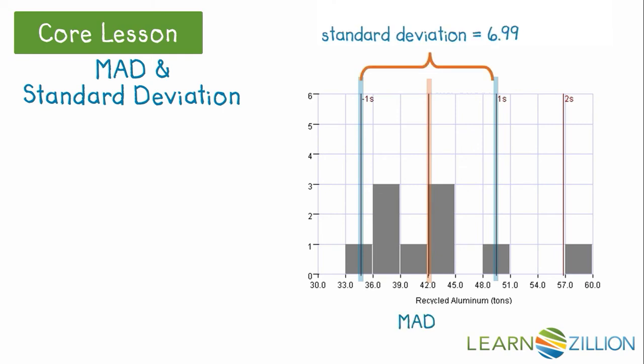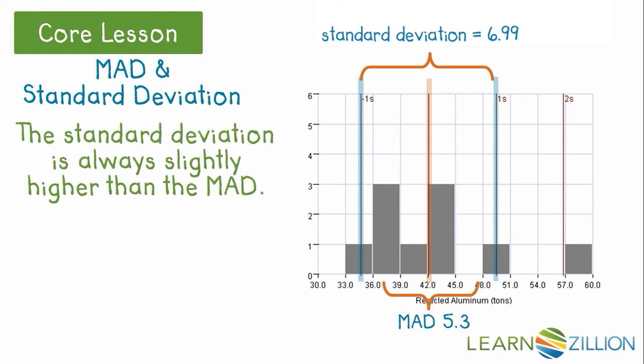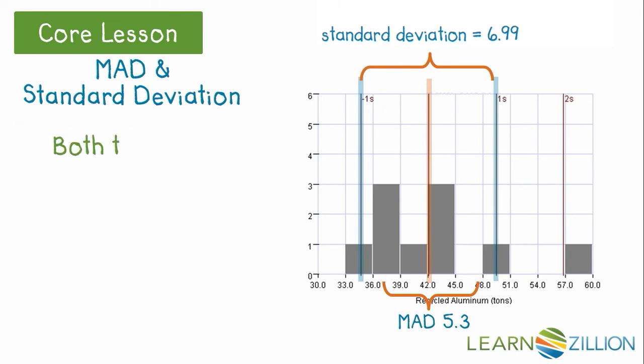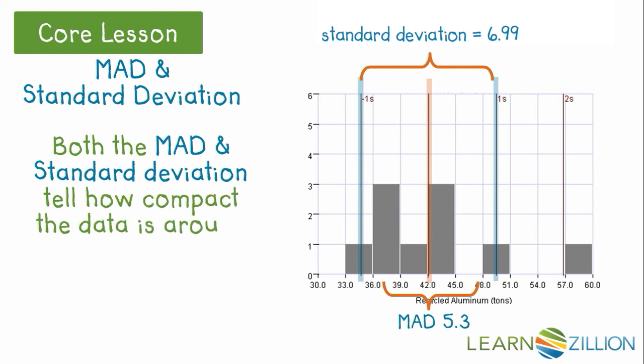Below the histogram I have indicated the MAD. The standard deviation is always slightly higher than the MAD due to squaring of the distances early in the calculation. Both the MAD and the standard deviation tell how compact the data is around the mean.